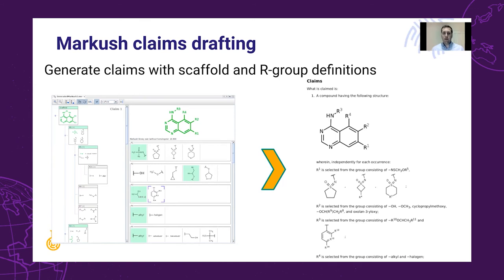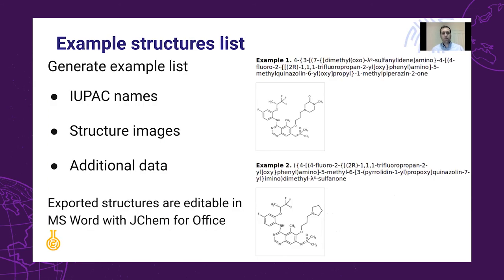Markush Editor is not only capable of creating the draft of the claims, but also helps you create the list of examples. It offers the capability to automatically generate an IUPAC name and a structure image for all of your examples. If you have additional data loaded into the application — such as preparation information, activity information, or corporate IDs — all of them can be exported together with the structures. Corporate IDs, for example, can be exported as a comment so you can easily remove them before filing your patent application.